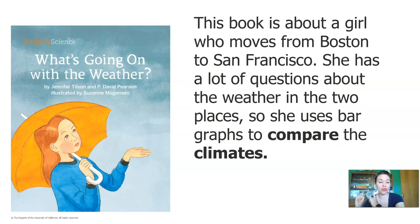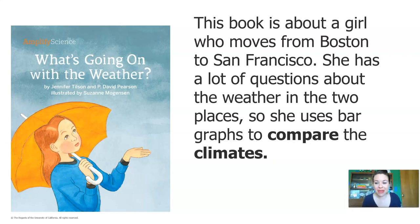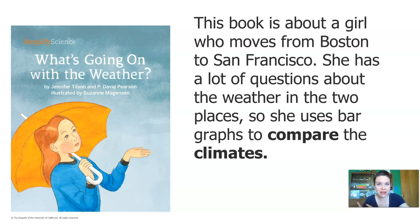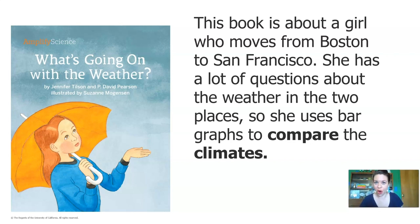So today we're going to read a book about a girl who moves from Boston to San Francisco. She has a lot of questions about the weather in both places, so she uses bar graphs to compare the climates. One of the things scientists do to gather evidence is they read. So we're going to be reading like scientists today. Do you know where Boston and San Francisco are on a map? It's okay if you don't — I'm going to show you.